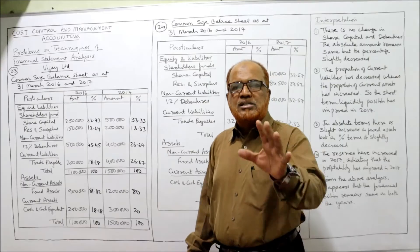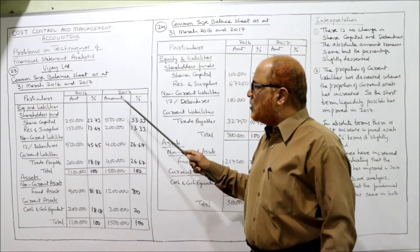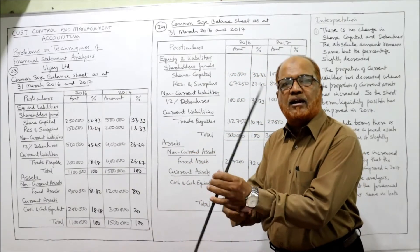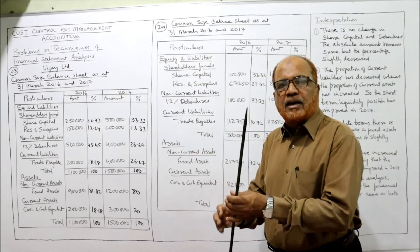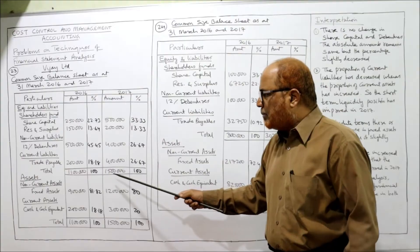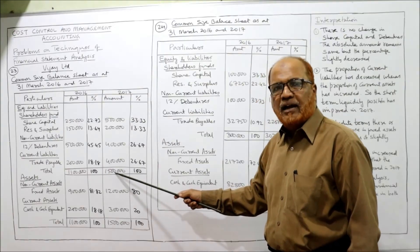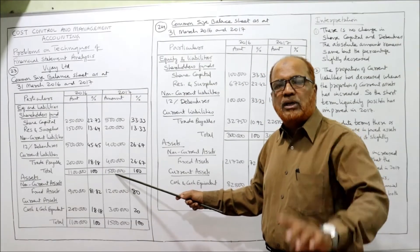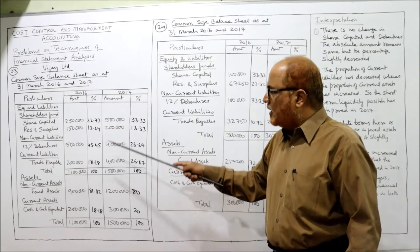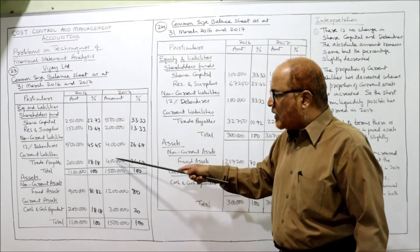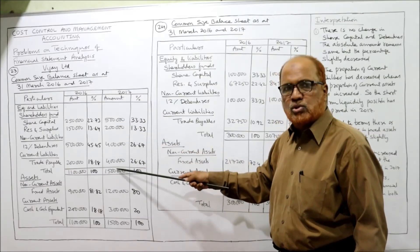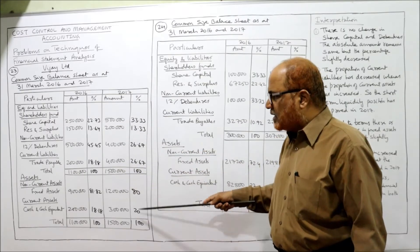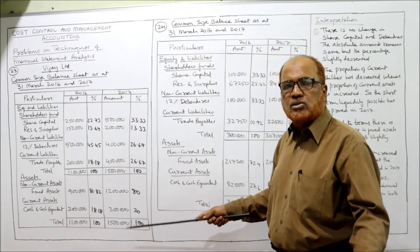The same procedure you have to follow for 2017, the current year. The current year total liability side is 15 lakh. You take 15 lakh as the denominator, take all individual values in the numerator, and you will get all the percentages. That's all. This is the end of problem number 23.